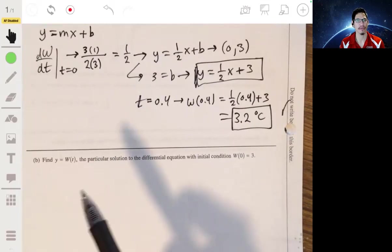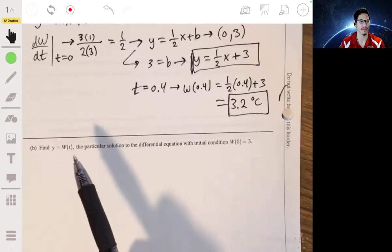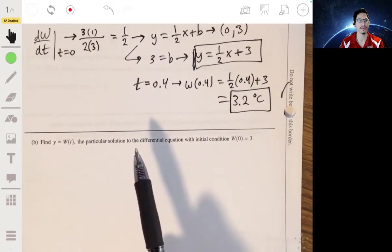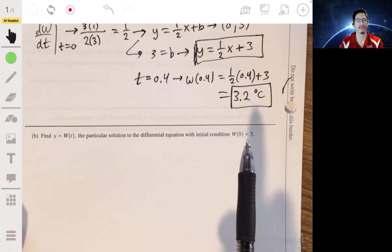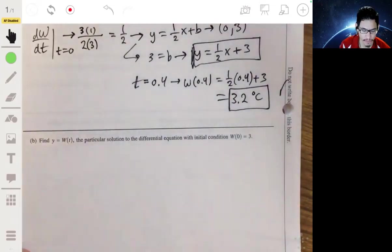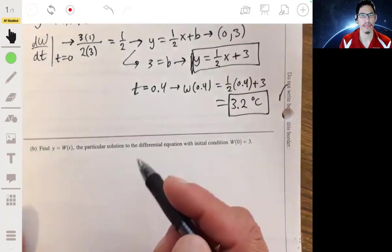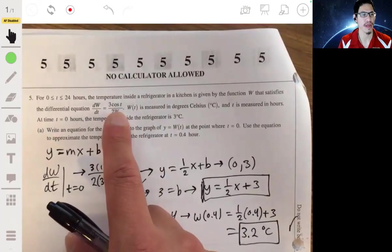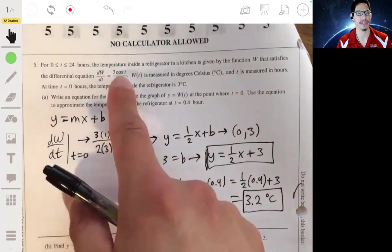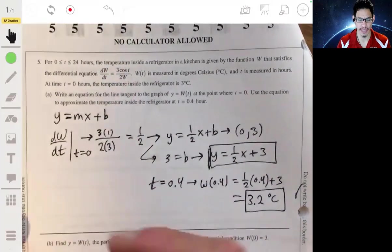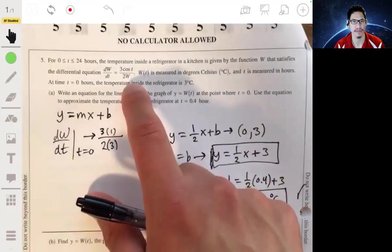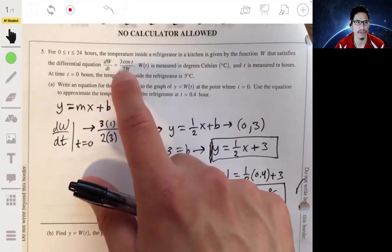All right, part B, we have to now find the equation for Y equals W of T, which is the particular solution to the differential equation with initial condition W of 0 equals 3. Okay, so we really just have to make sure that we have our integration mastered. And this is going to be entering differential equation or using separation of variables.